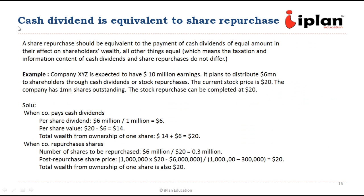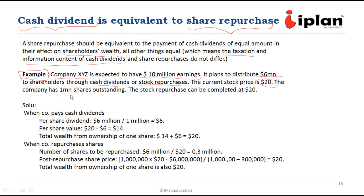Here we will notice that cash dividend is equivalent to share repurchase. For the shareholder, it will not make any difference whether cash dividend is paid or share repurchase is made — in both cases the wealth remains the same. We assume taxation and information content of cash dividend are not making any difference on share price for simplicity. Company XYZ is expected to have $10 million in earnings and plans to distribute $6 million through cash dividend or stock repurchase. The current price of the share is $20 and the current number of outstanding shares is 1 million.